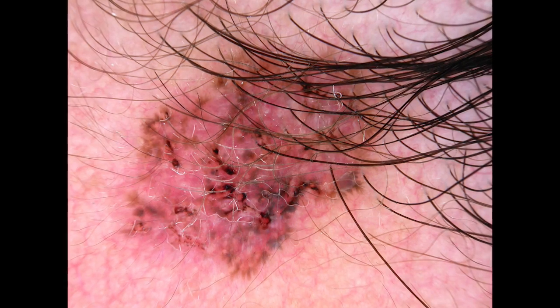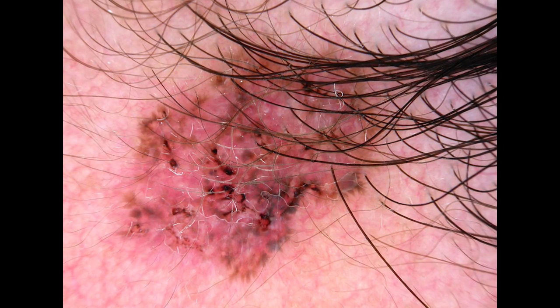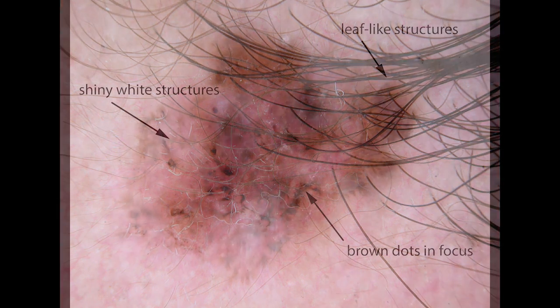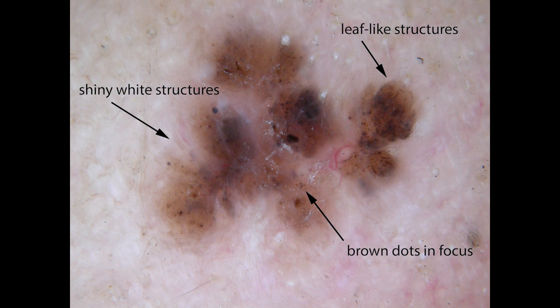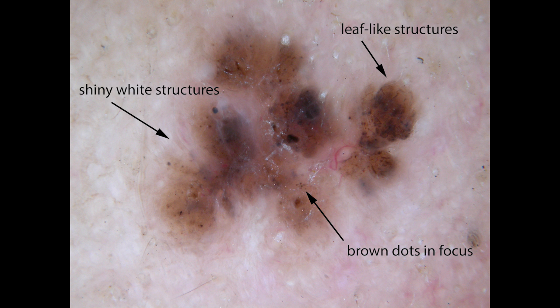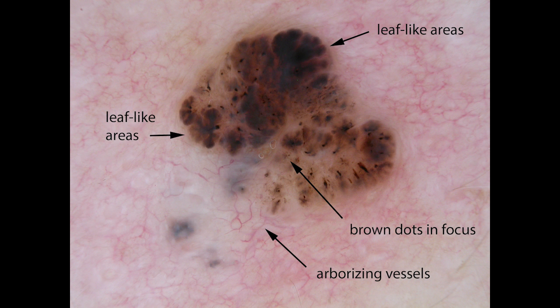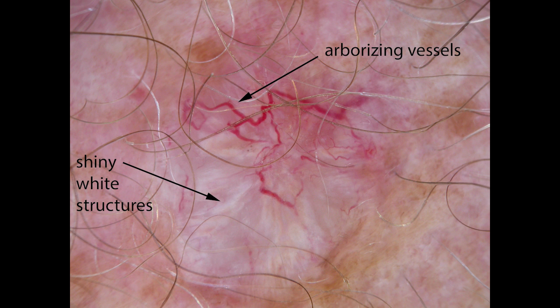Here are some examples of basal cell carcinomas seen through a dermatoscope. In this basal cell carcinoma, you can see leaf-like structures, brown dots and foci, and shiny white structures. This basal cell carcinoma also has leaf-like areas, brown dots and foci, along with arborizing vessels. This is a typical nodular basal cell carcinoma with arborizing vessels and shiny white structures.